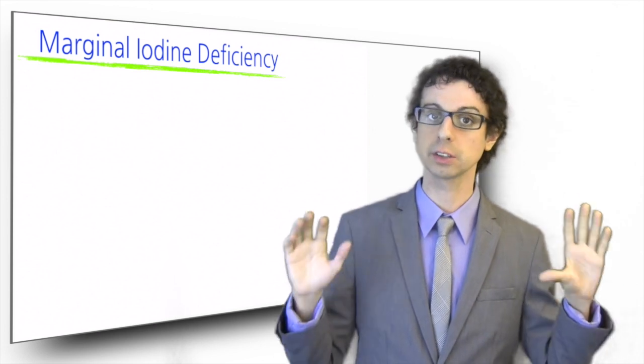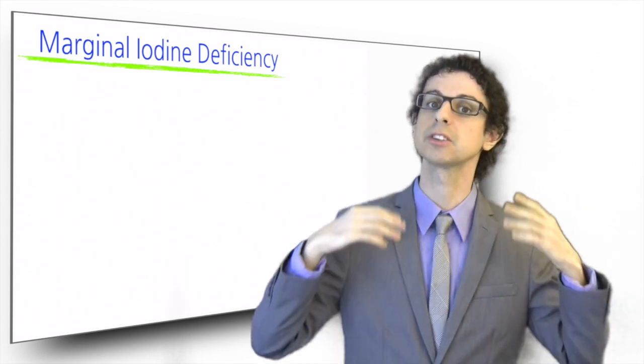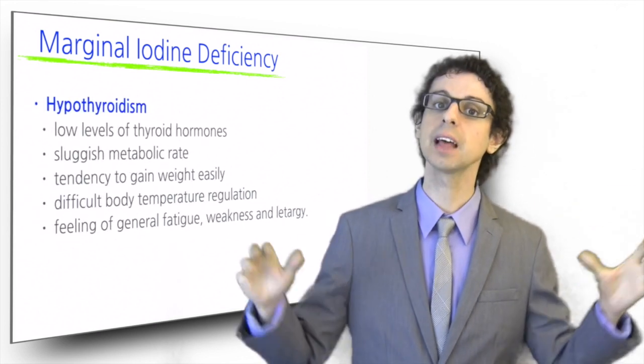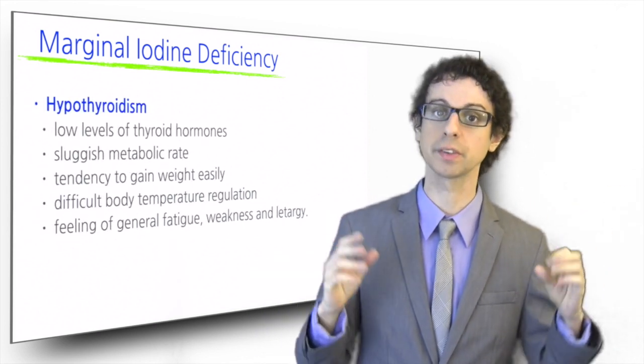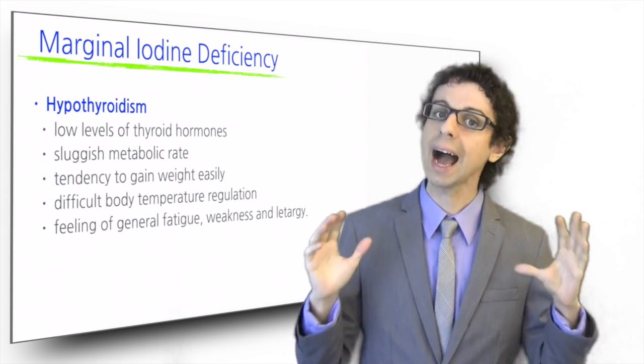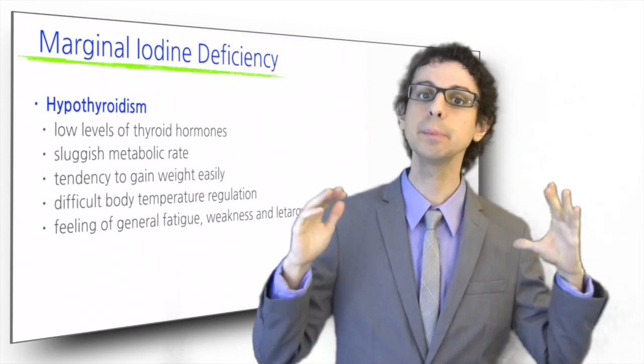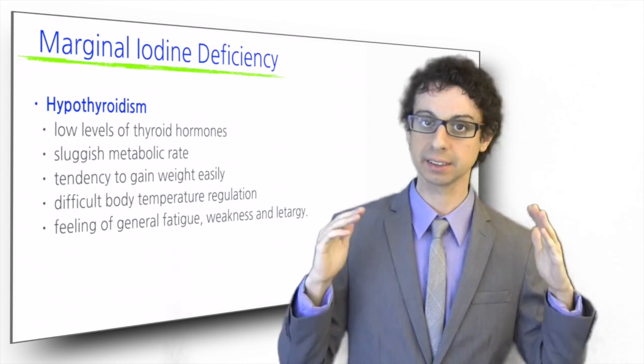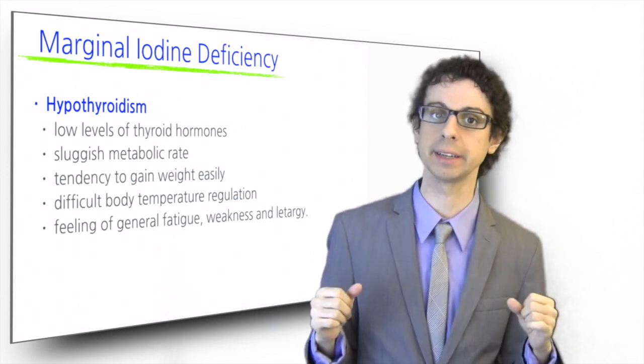Marginal deficiencies of iodine will not result in such traumatic consequences, but will result in hypothyroidism, that is a lower than normal production of thyroid hormones. The active thyroid hormone sets the pace of our body's metabolism, and so if iodine is deficient, we'll have a sluggish metabolic rate.